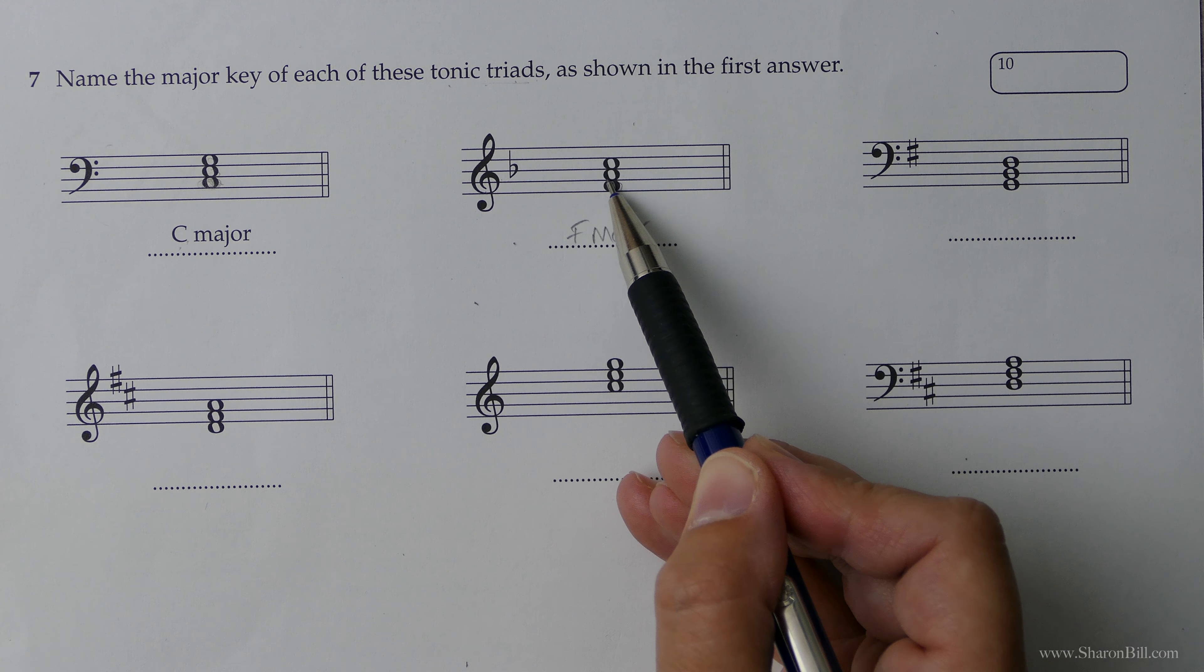Let's look at the next one. So here we've got a key signature of F sharp. So we must be in G major. And we can double check that we know in the bass clef. It goes, good boys deserve. The tonic is G. G, B, D. First, third, fifth of the scale. There we go.